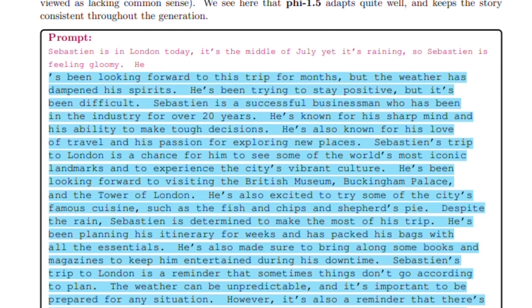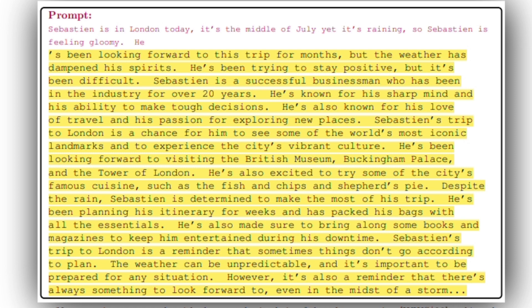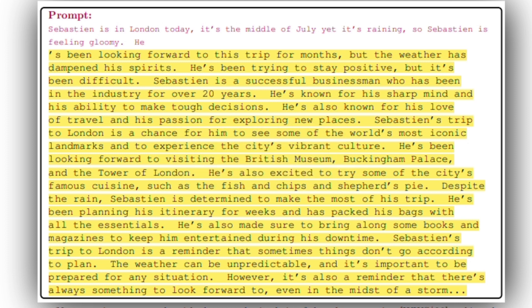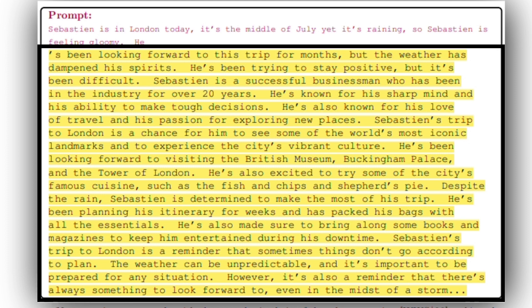It immediately follows up the first sentence with another one that talks about the weather affecting the subject of the story's motivation to carry on with the travel plan. Even though July and rain are two concepts the model didn't expect to interact with each other, it still adapted quickly and gave a consistent story.